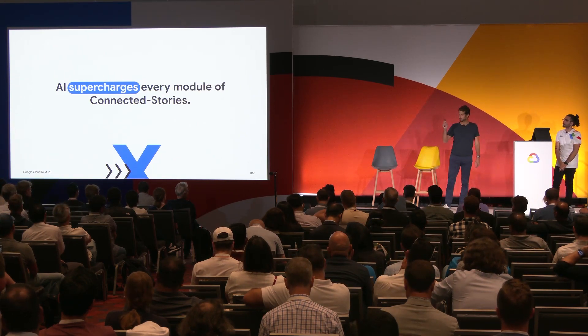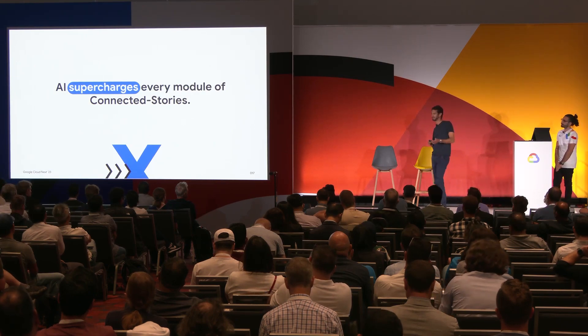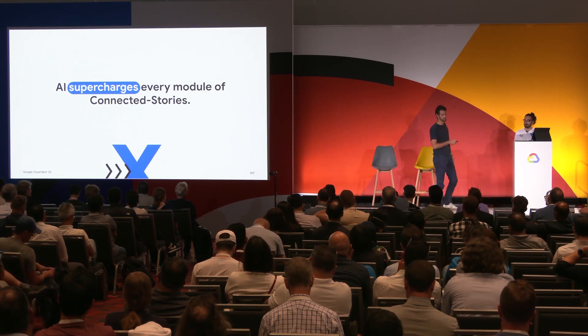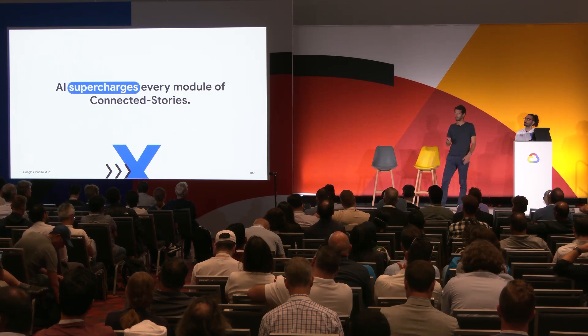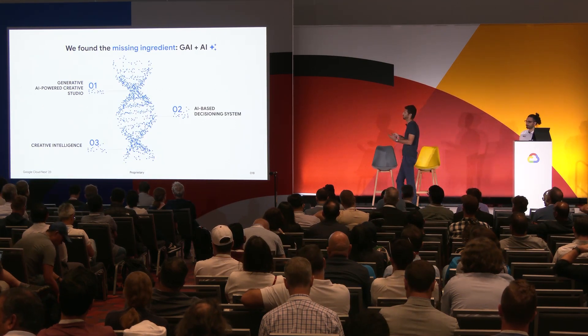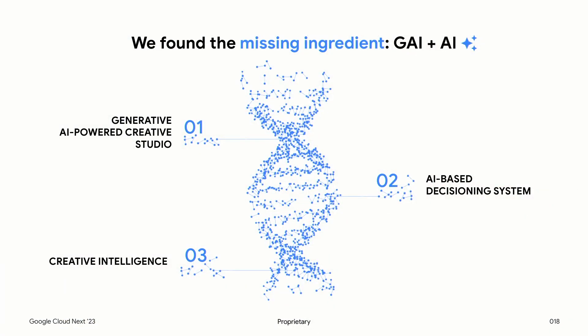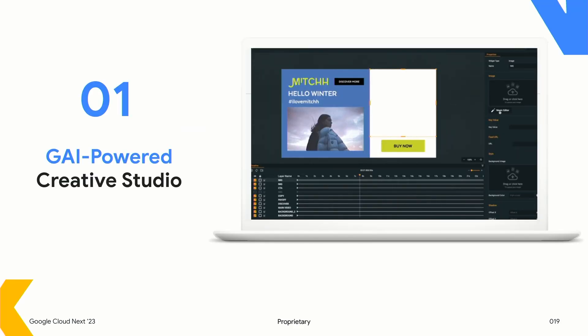The platform is composed of three different modules: the Creative Studio, the Decisioning System, and Creative Intelligence — which, thanks to our friends at Google Cloud, we've been able to bring to life. Something revolutionary happened at the beginning of the year: generative AI became the missing ingredient for the platform to connect the dots of our other AI-based solutions and really expedite the process of content personalization. Let me show you how the platform works.